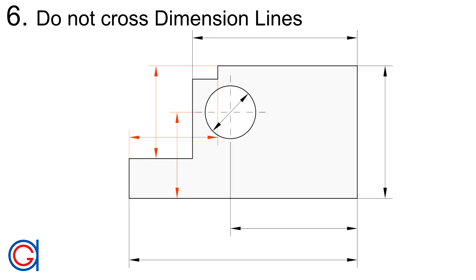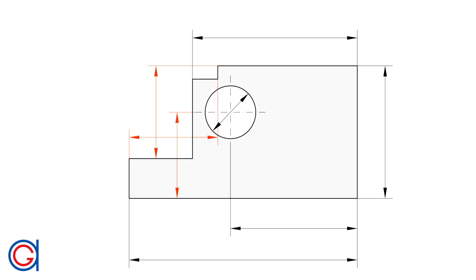Rule 6: Dimension lines do not cross other dimension lines or extension lines. You can see in red a good example of what not to do, and in the next shot the way it should be dimensioned.